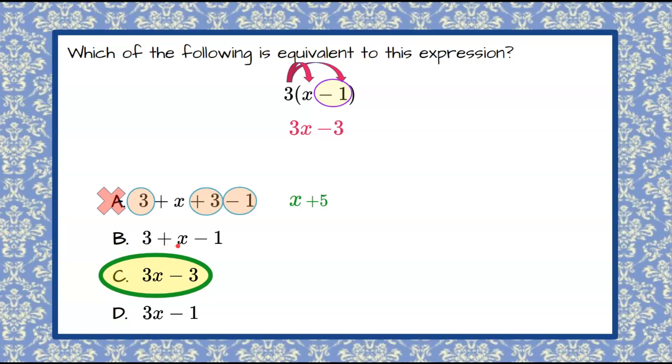Choice B. We have our x term and then we have two like terms 3 and negative 1. So we have our x. 3 and negative 1 are positive 2 and x plus 2 is not equivalent to the expression we have.